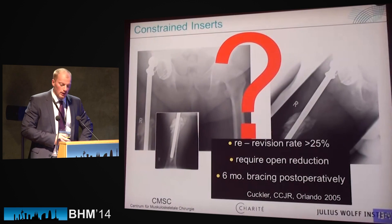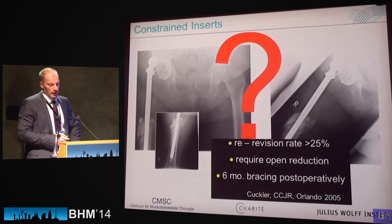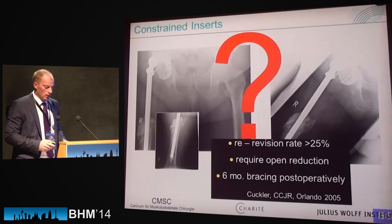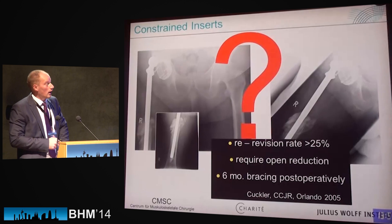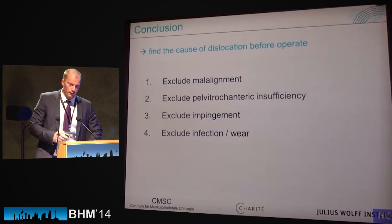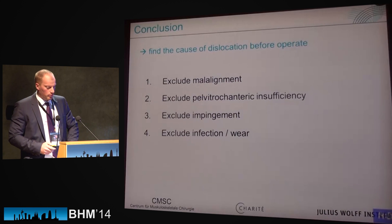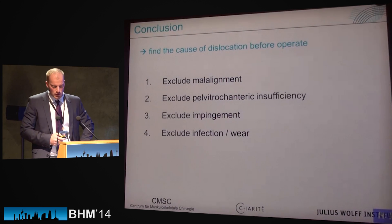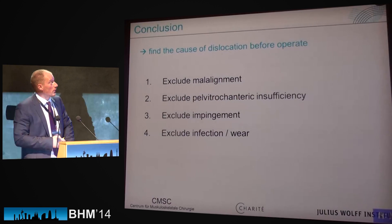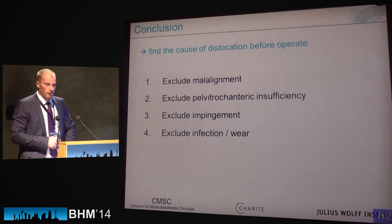Briefly on constrained liners: they are a possibility, but we recommend using them only in special cases, as the literature shows high re-revision rates with constrained liners. In conclusion, we have to find the cause of dislocation before we treat and operate. The four main steps are: exclude malalignment, exclude pelvic-trochanteric insufficiency, exclude component impingement, and exclude infection or wear problems. Thank you for your attention.